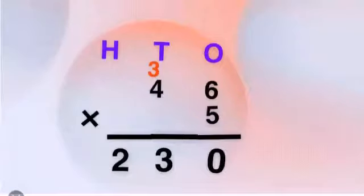In this example, we multiply 46 by 5. Multiply the ones first: 6 times 5 equals 30. We write 0 in the ones column and carry 3 to the tens column.